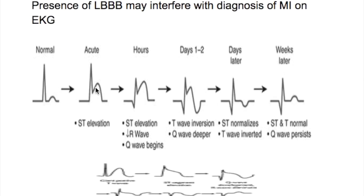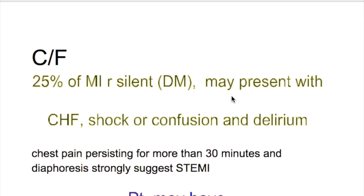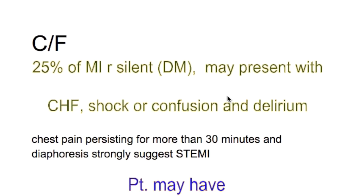In the acute phase there is ST elevation. After a few hours, a Q-wave appears but is not deep. After one to two days, the Q-wave becomes deeper, the T-wave becomes inverted, and ST remains elevated. Days later the ST becomes normal while T is still inverted. After weeks, both ST and T become normal, and the Q-wave persists and remains deep.